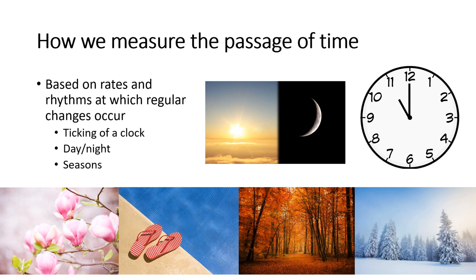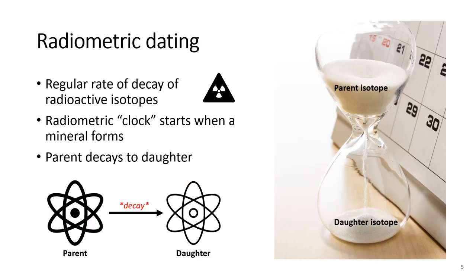Dating rocks that are usually way older than any of us requires radiometric dating. Radiometric dating is based on the fact that radioactive isotopes decay at regular rates. An unstable radioactive element like uranium eventually decays to a more stable element like lead. In this case, the parent element would be uranium and the daughter would be lead.